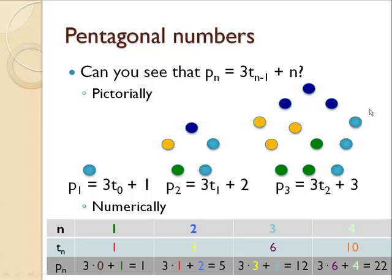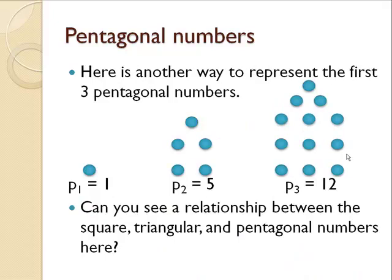There's another way to represent pentagonal numbers, 1, 5, and 12, in looking more like a house. Can you see a relationship on these pictures between the square numbers, the triangular numbers, and the pentagonal numbers?